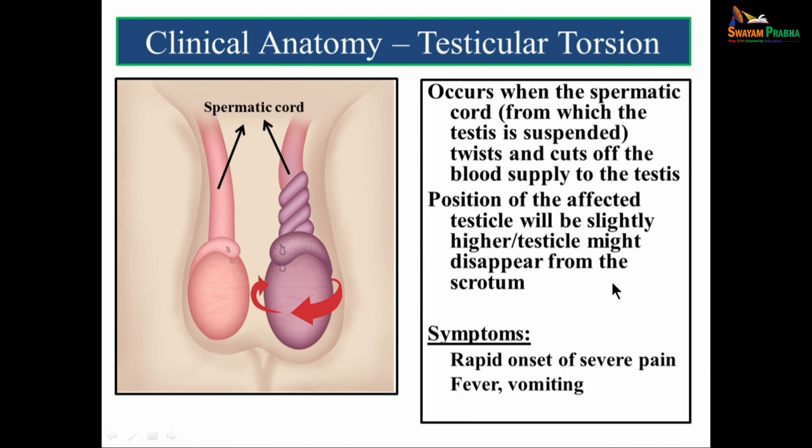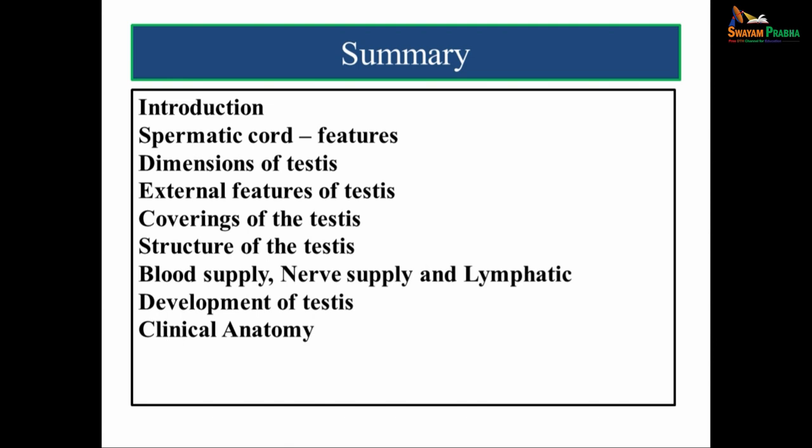In summary, we covered: a brief introduction on the clinical aspects of the testis; features of the spermatic cord, its coverings; dimensions of testis; external features of testis; coverings and structure of the testis; blood supply, nerve supply and lymphatic drainage and their importance; development of testis and descent of testis; and finally clinical anatomy. That brings us to the end of the topic. Thank you.